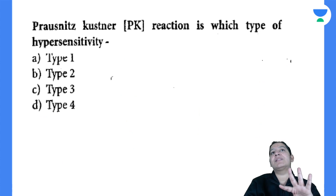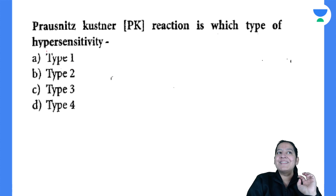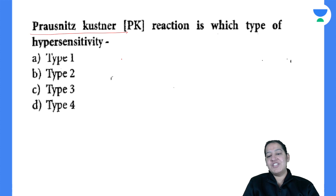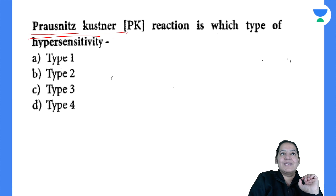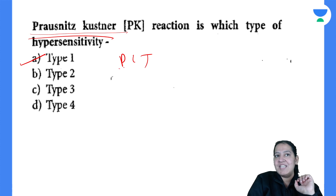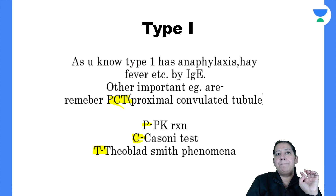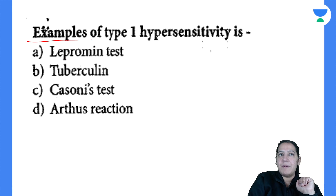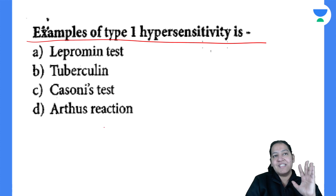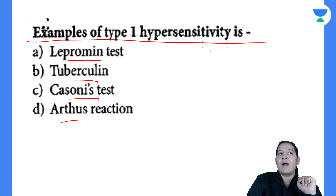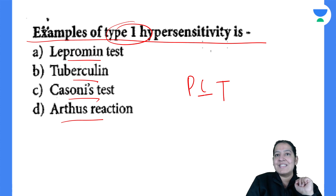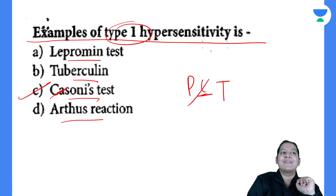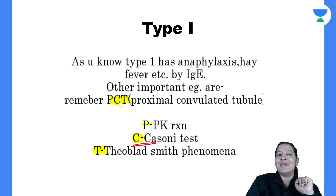Now see how many questions come from your past year questions based on these mnemonics. Question 1: Prausnitz-Küstner reaction is an example of which hypersensitivity? The answer is type 1 — the mnemonic is PCT, and P is PK reaction. Question 2: Which of the following is an example of type 1 hypersensitivity — Lepromin, Tuberculin, Cassoni, or Arthus? Apply the mnemonic PCT — C is Cassoni — so the answer is C, Cassoni test.